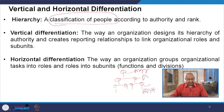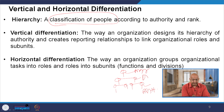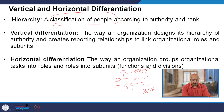This is an example of vertical differentiation — the way an organization designs its hierarchy of authority and creates reporting relationships to link organizational roles and subunits. For horizontal differentiation, the organization groups organizational tasks into roles and into subunits — functions and divisions — arranged in horizontal positions, while vertical differentiation arranges these in vertical positions.